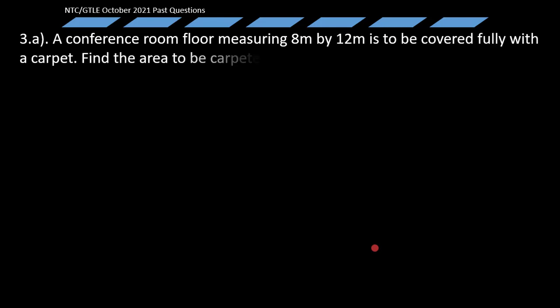Let's target the first question, number 3a. A conference room floor measuring 8 meters by 12 meters is to be covered fully with a carpet. Find the area to be carpeted. Solution: If it is a conference room measuring 8 meters by 12 meters, then that particular conference room must be a rectangular one or the floor must be a rectangle. And you know area of a rectangle is simply equal to length times breadth, where length is the longest side and breadth is the shortest side.